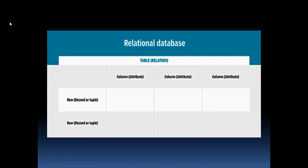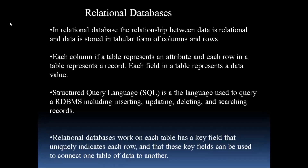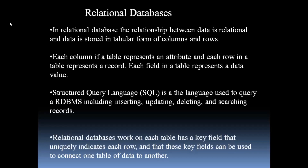Whatever data I store in a relational database will be in the form of rows and columns. Each column in a table represents an attribute, each row in a table represents a record, and each field in a table represents a data value.